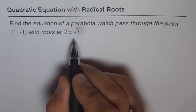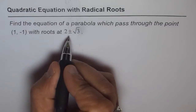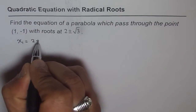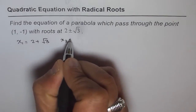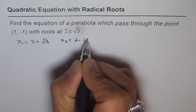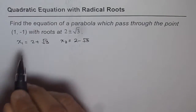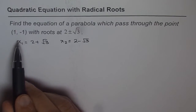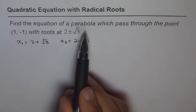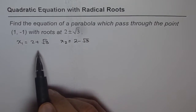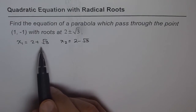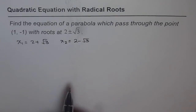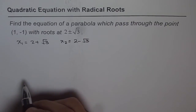From the problem we know there are two given roots. We can say x1 is 2 plus square root 3, and x2 is 2 minus square root 3. These are the two roots. We are also given a point which is (1, -1). We will use this point to find specifically which parabola, amongst the family of curves going through these two intercepts. These are real roots, so these are the real intercepts or real zeros.